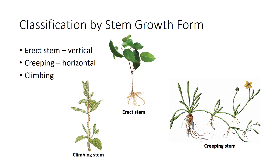The stem growth form is based on how the stem stands in relation to the ground. An erect stem is vertical with respect to gravity, whereas a creeping habit stem grows horizontal with respect to gravity. A plant that grows along the ground and then climbs when it comes in contact with an obstacle has a climbing habit, like an ivy plant. These terms are often used in weed identification guides.